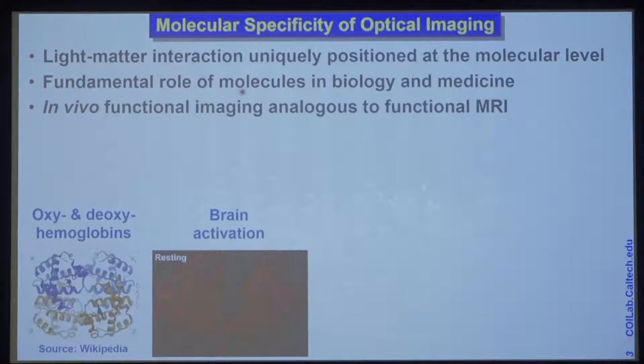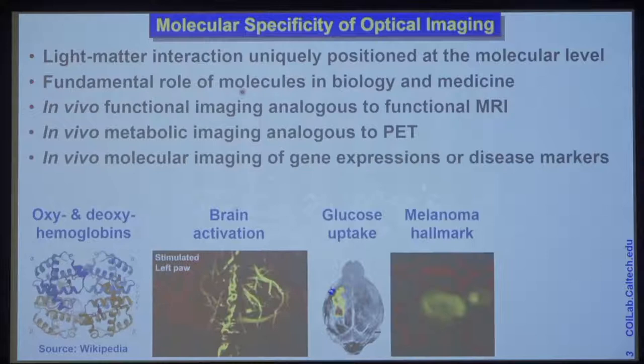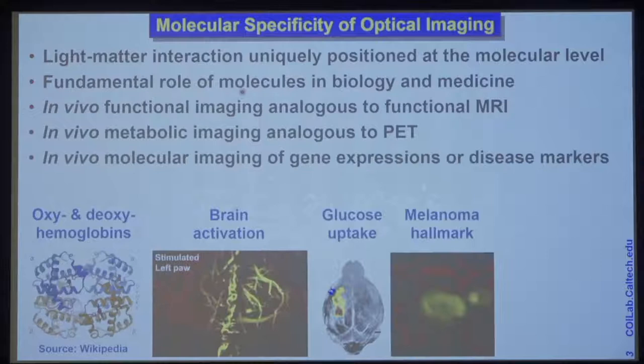By detecting molecules, we can provide a number of imaging capabilities, including in vivo functional imaging, very much similar to functional or BOLD MRI; in vivo metabolic imaging similar to PET; in vivo molecular imaging of gene expressions or disease markers; even in vivo label-free histologic imaging. You can see this very powerful list of capabilities that we face daunting challenges.